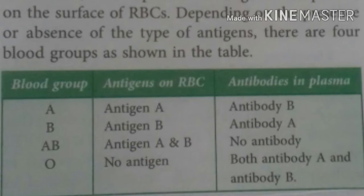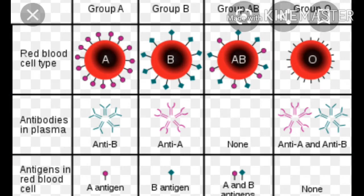For example, if antigen A is present in the RBC, the plasma lacks antibody a. Likewise, if antigen B is present, antibody b is absent. Antigen A and B may both be present in the same person, with the absence of both antibodies. Likewise, antibodies a and b may be present together in the plasma without the presence of any antigen in red blood cells.